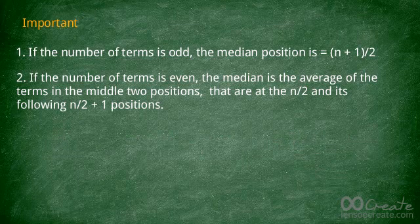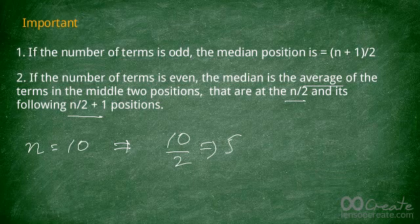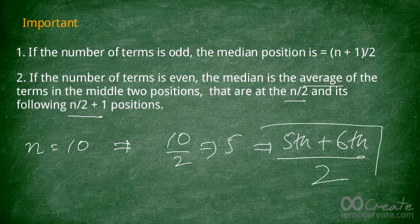If the number of terms is even, you don't have one value in the middle — you have two. The median is the average of the terms at positions n/2 and (n/2 + 1). For example, if there are 10 terms, you find the fifth and sixth values, add them up, and divide by two — that's your median.